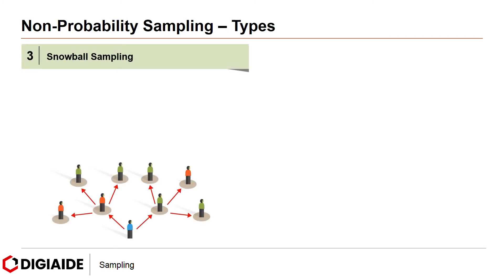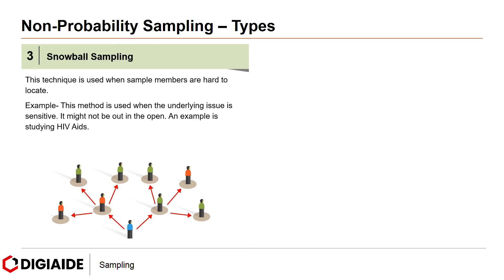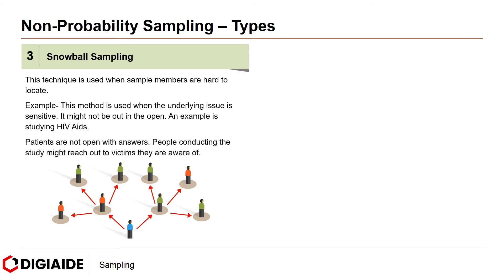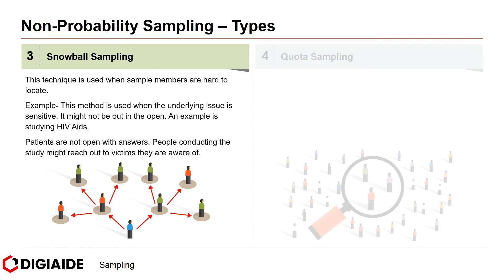Third, snowball sampling. This technique is used when sample members are hard to locate — for example, when the underlying issue is sensitive and not out in the open, such as studying HIV/AIDS. Patients are not open with their answers, so people conducting the study reach out to victims they are already aware of, creating the snowball effect.